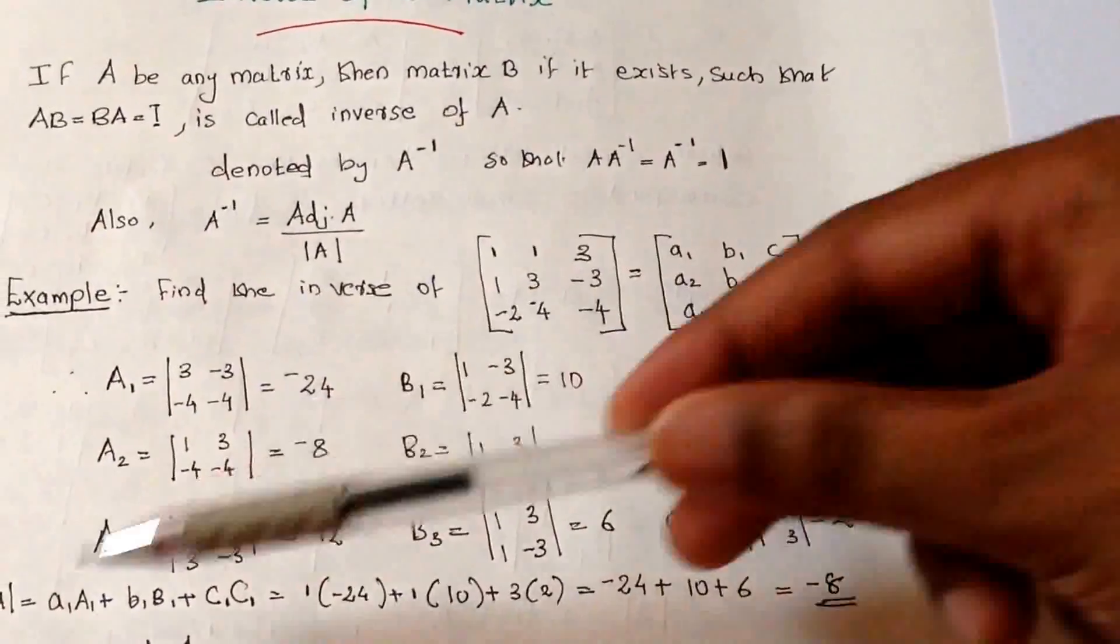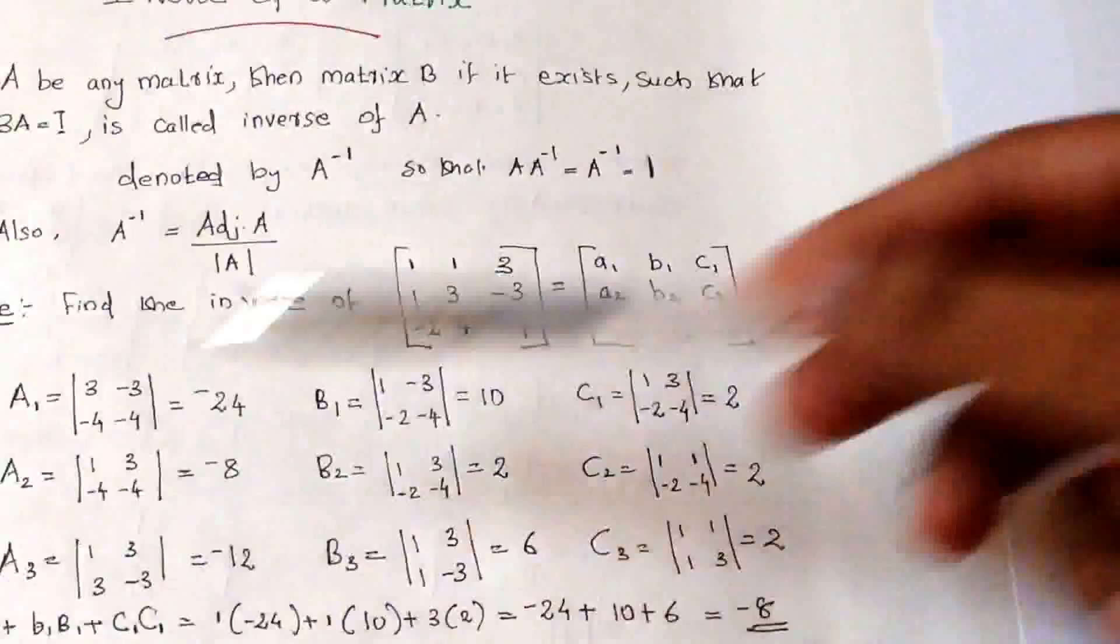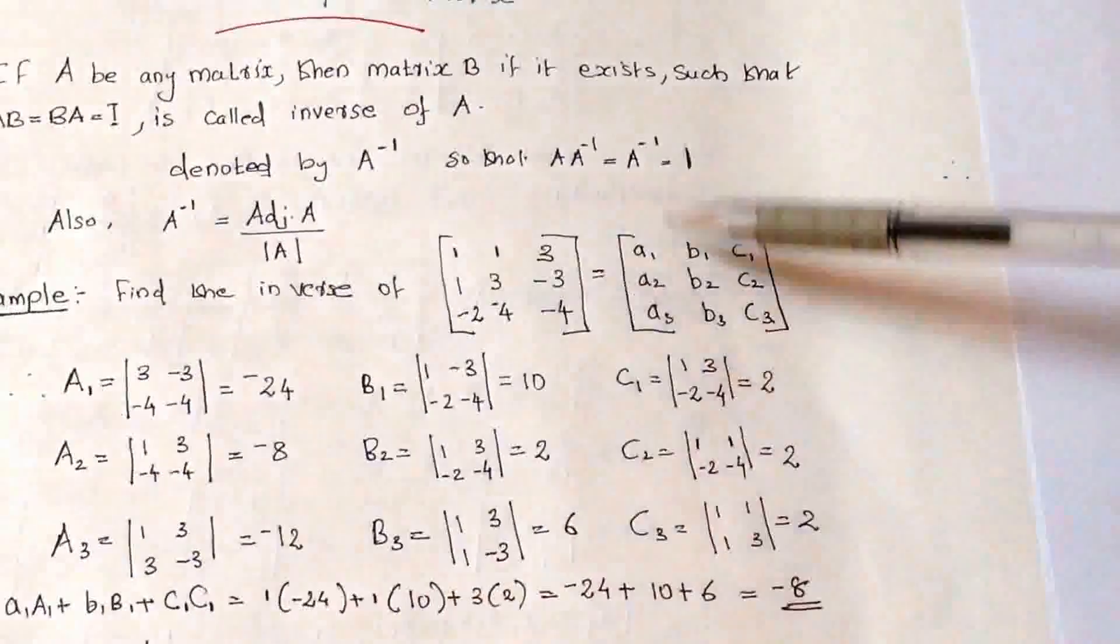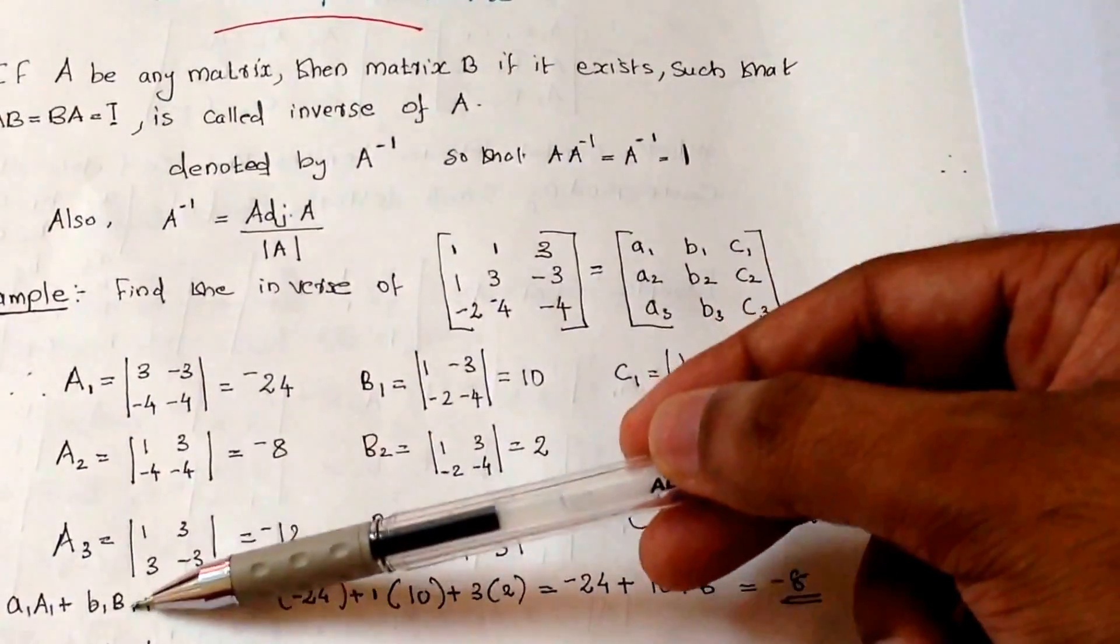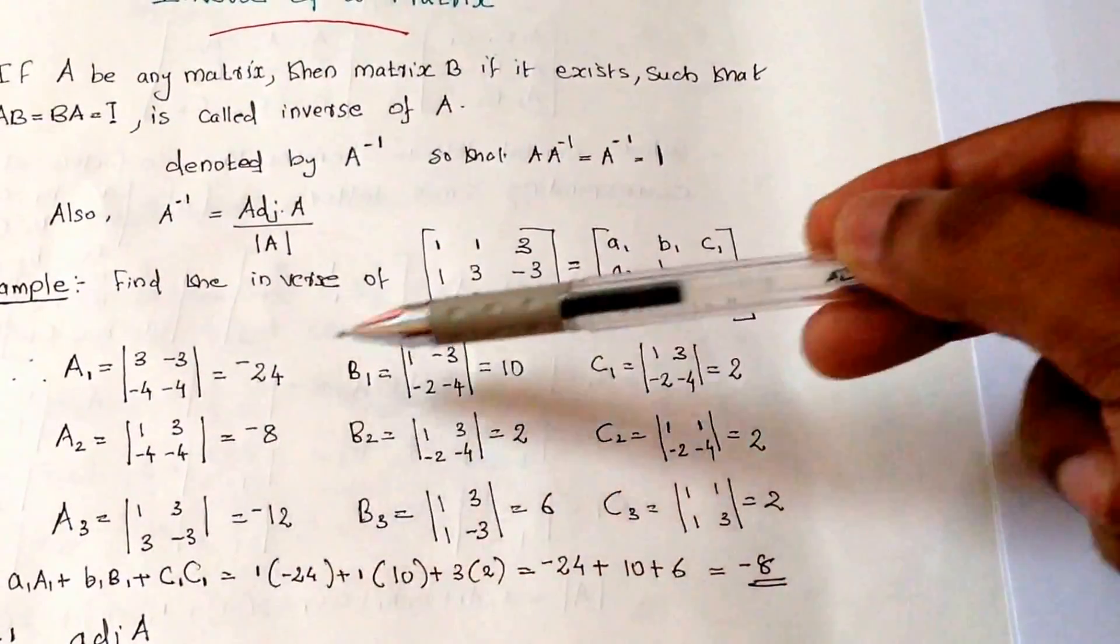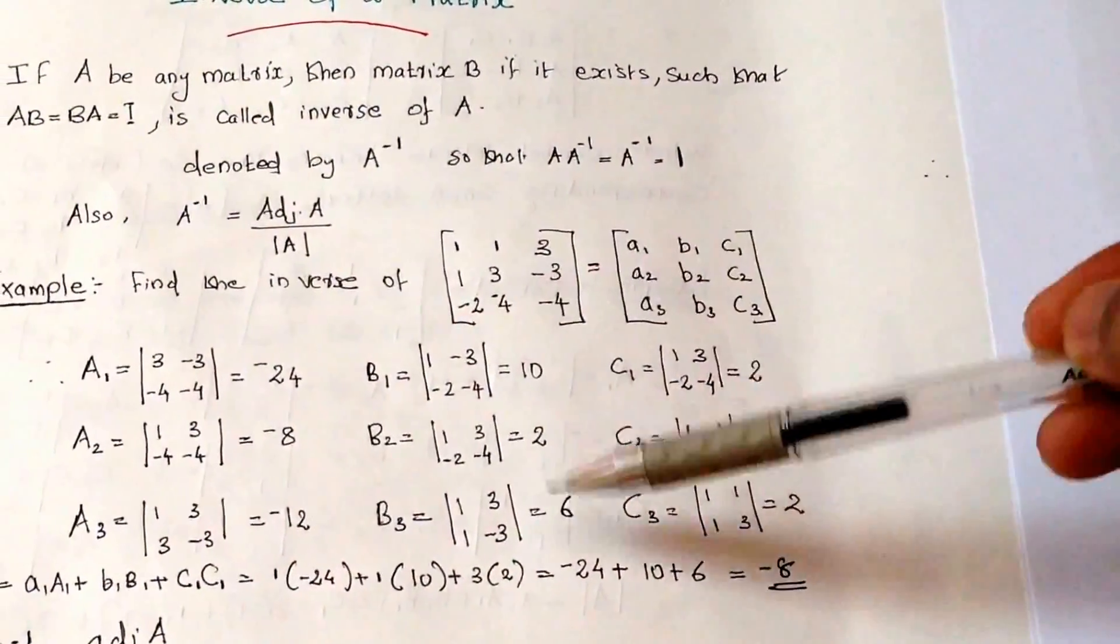Then we will find the determinant A. It equals a into capital A1, A1 into this cofactor A1, plus similarly B1, B1 into capital B1, then C1.